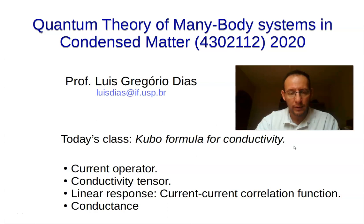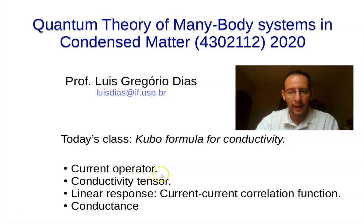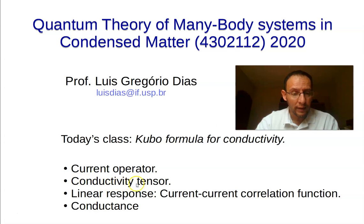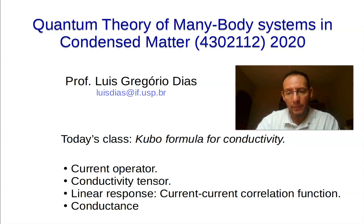Today's class we're going to go over the Kubo formula for the conductivity, continuing our series of classes on linear response theory. We're going to first define a current operator and then the conductivity tensor — how we can express the current densities in terms of the applied electric field via the conductivity tensor. Then we'll derive the Kubo formula and express the conductivity tensor in linear response via the current-current correlation function. Finally, we'll consider the case for a semi-isotropic conductivity tensor and how to calculate the conductance for a two-terminal system.